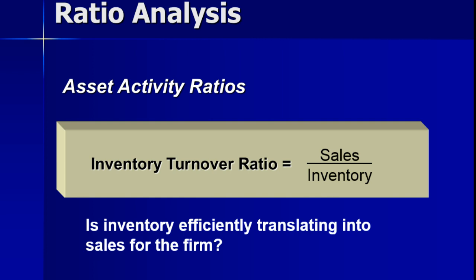Inventory turnover ratio is your sales to inventory. We're looking at what type of inventory base you have to maintain your sales. As discussed earlier, the smaller the inventory the better for companies, because if you can have a small inventory, you don't have to tie up a lot of money. So if you're a car dealership, you'd ideally like to have 20 cars on your lot rather than 100 cars — the more money you tie up in inventory, the less efficient your business is. You want this to be a high multiple, looking at how many times you completely replenish your inventory in a year.